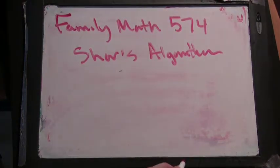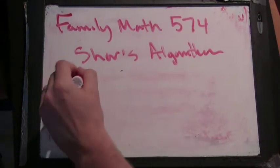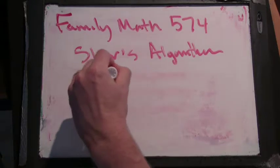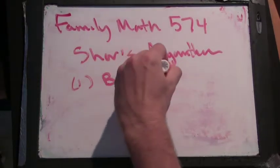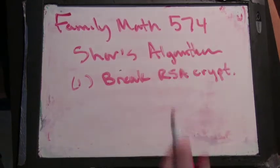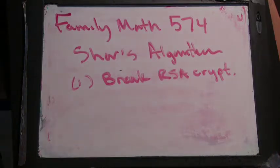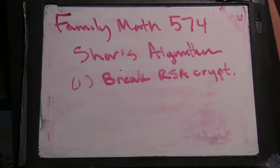Shor's Algorithm. What are some things you remember from the video or you liked about the video? Well, it showed how to break the cryptography method. Okay, so we break RSA cryptography. Why would that be a problem? Because everyone can access anything that's encoded by RSA cryptography. And that's very widely used. Yeah, and it's very widely used.